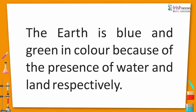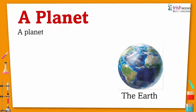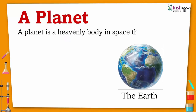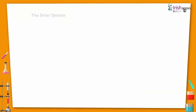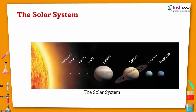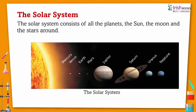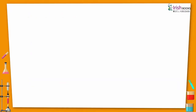A planet is a heavenly body in space that moves around the Sun. The solar system consists of all the planets, the Sun, the Moon, and the stars.